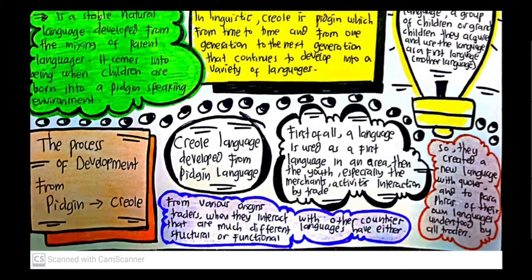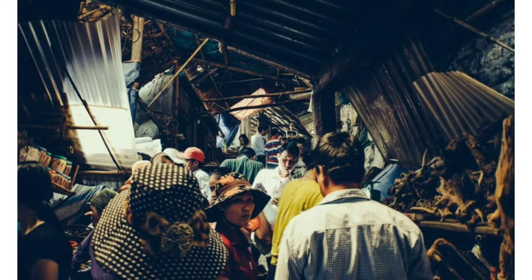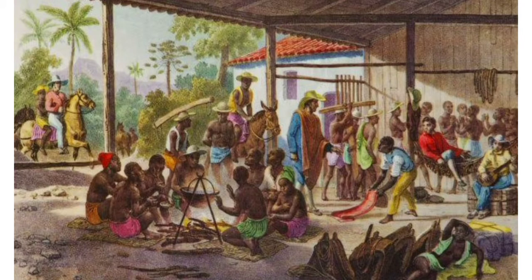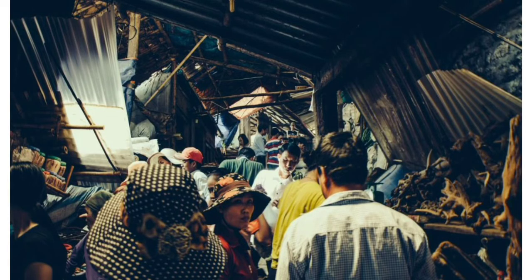For the process of development from pidgin to Creole: Creole language developed from pidgin language. First, a language is used as a first language in an area. Then, especially the merchants through trade interactions with various origins, when they interact with other countries that have different languages — structural or functional — they create a new language with elements of their own languages understood by all traders.